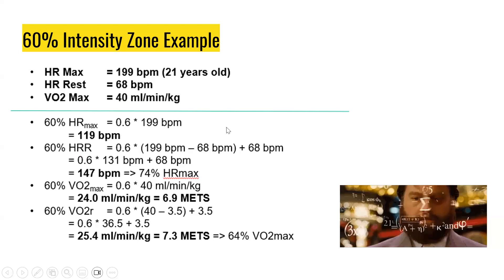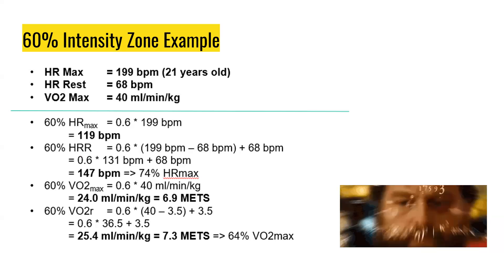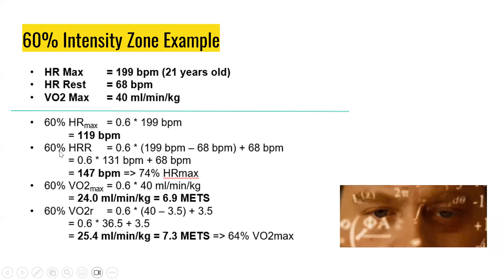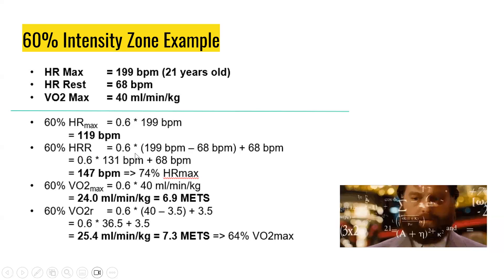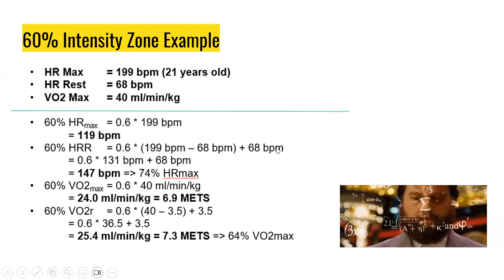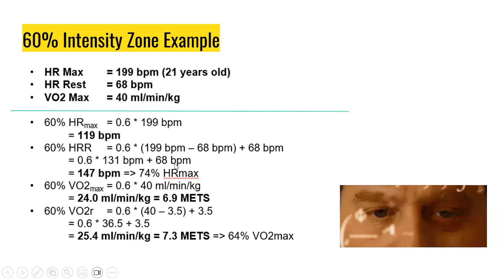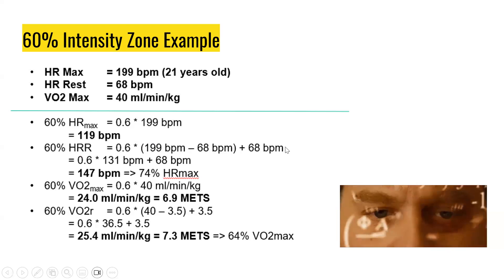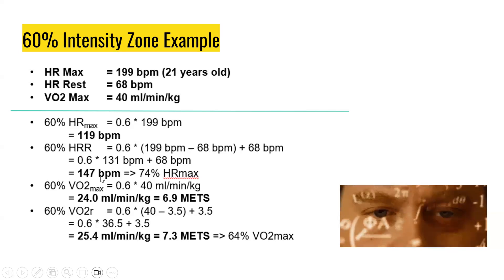Fairly simple — we've done this before in lab. Now let's look at the heart rate reserve method, the Karvonen method. To calculate 60% using the heart rate reserve formula: percentage times heart rate reserve plus heart rate at rest. Plugging in the values: 0.6 times (199 minus 68) plus 68 beats per minute. Solving, we get 147 beats per minute.